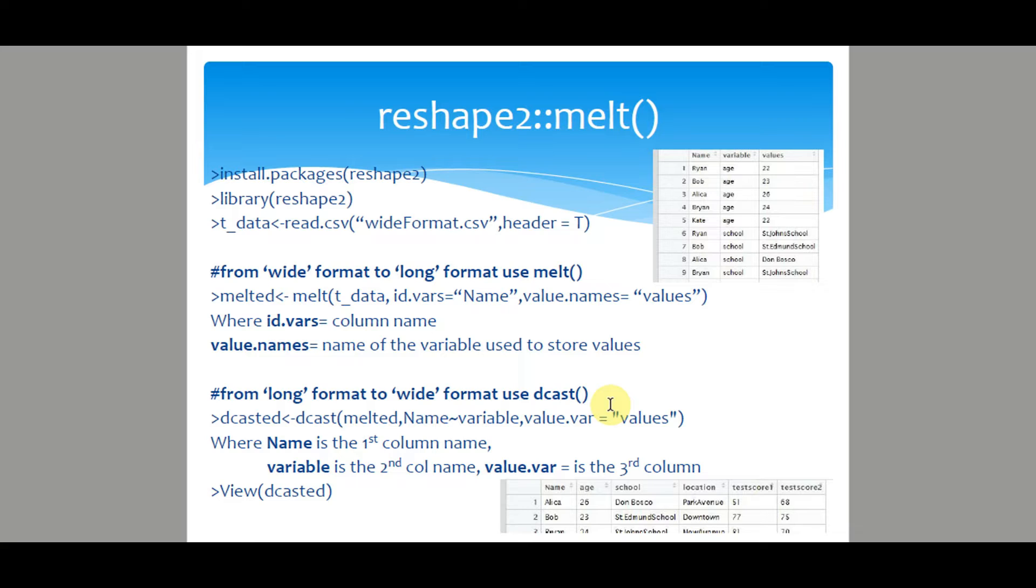First, install and load the package reshape2. Then load a sample data, for example wide format CSV when header is equal to true. The data is in wide format, so from wide format to long format use the melt function.